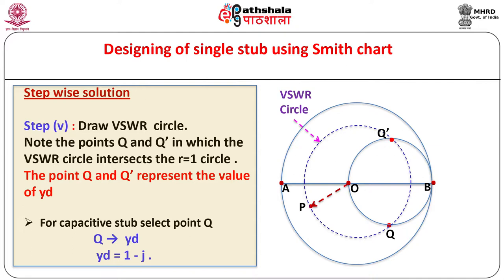The points Q and Q-prime represent the value of YD in equation number 4. If we want an inductive stub, point Q-prime is to be used for YD, while for a capacitive stub, YD is taken as point Q. As per the requirement in the problem, we need a capacitive stub, hence we select point Q. Accordingly, YD is equal to 1 minus j.